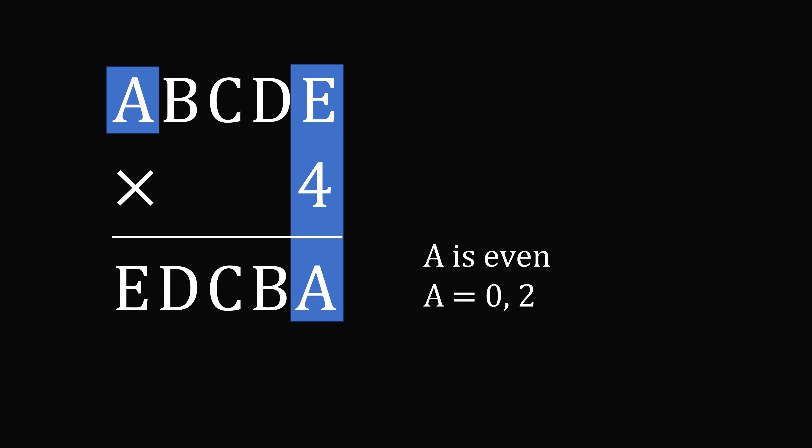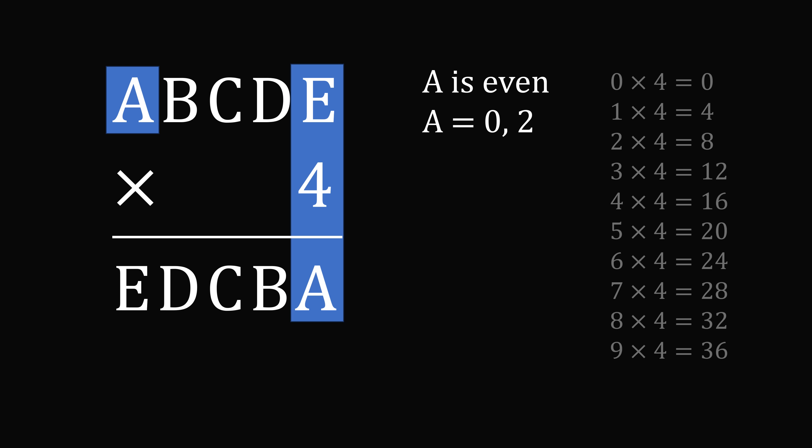So let's eliminate the possibility that A is equal to 0. We'll look at the times table for 4. If A were equal to 0, it would have to be that E were equal to 0 or E were equal to 5. Now, we can't have E equal to 0 because A would be equal to 0. So we would need to have E is equal to 5. But what would happen if E were equal to 5?